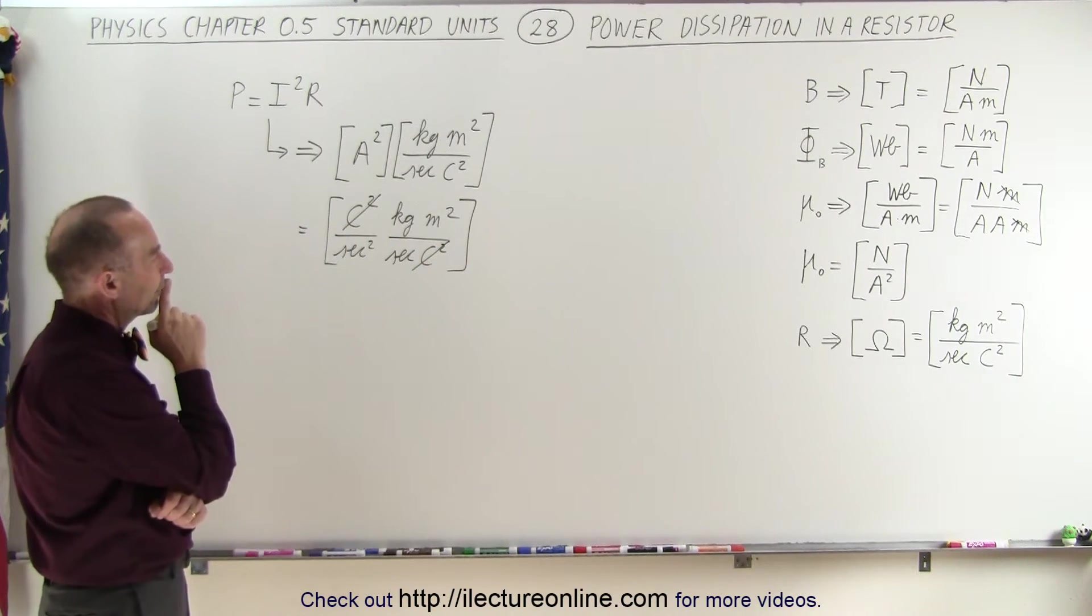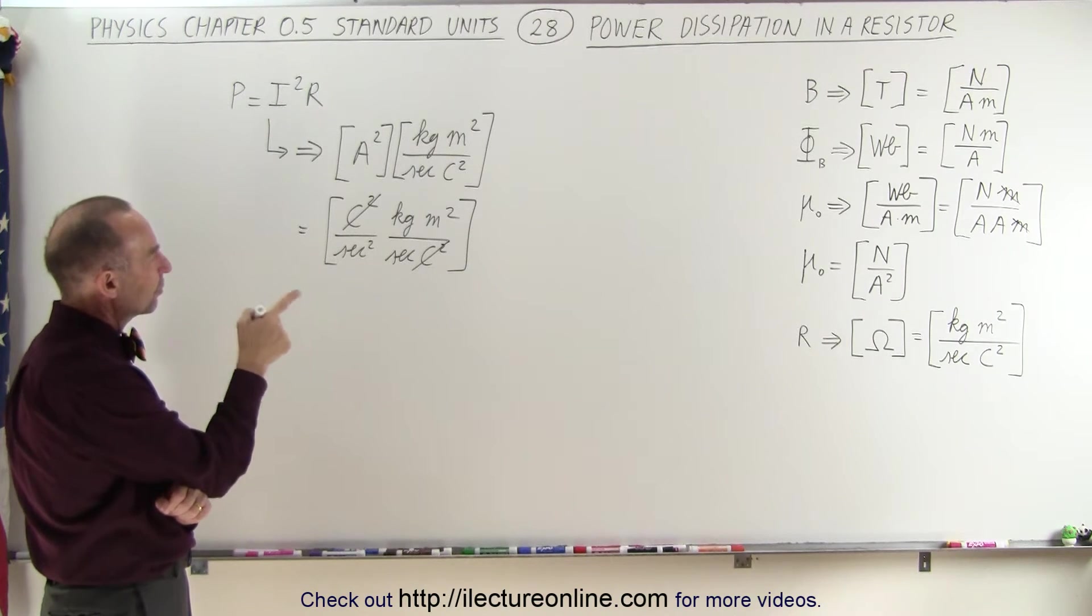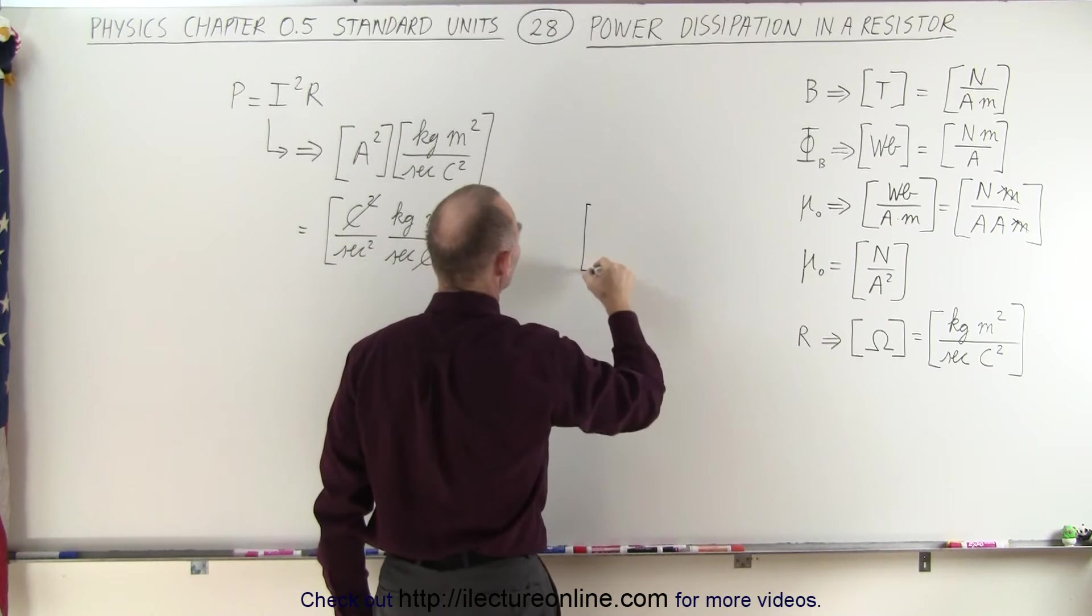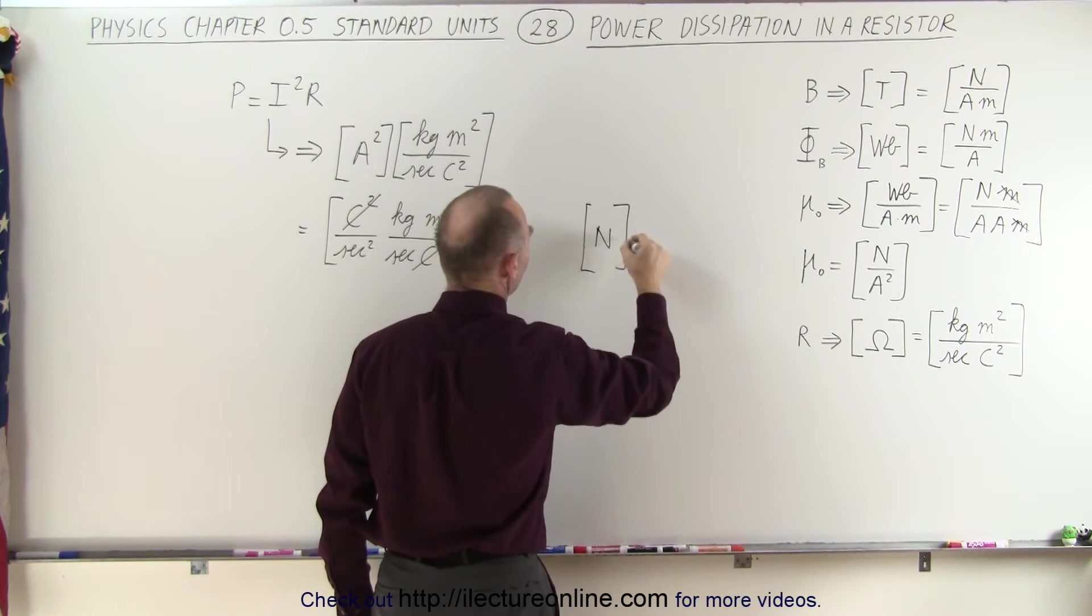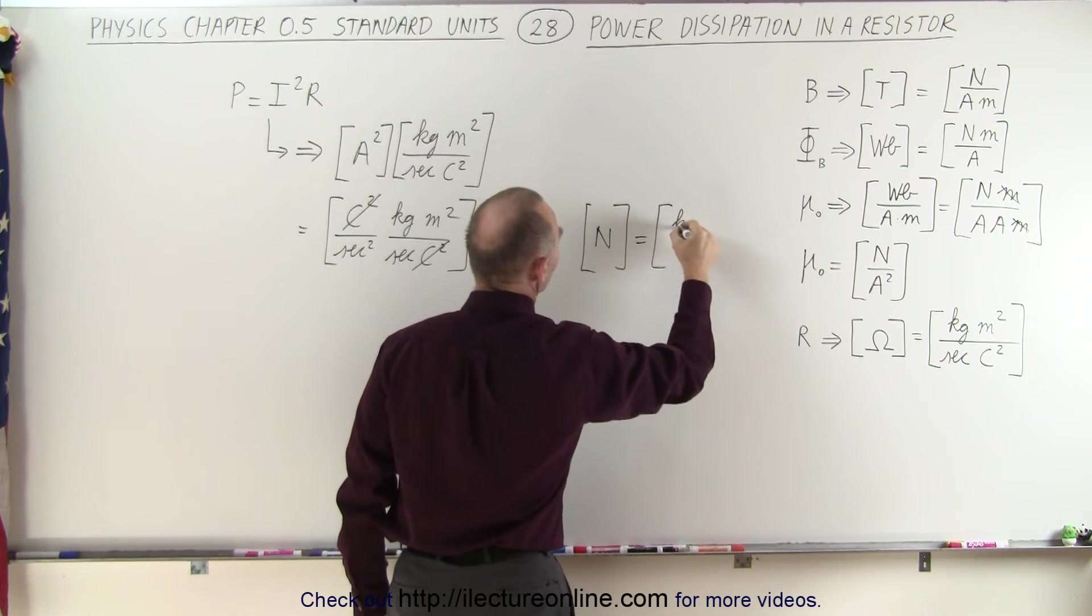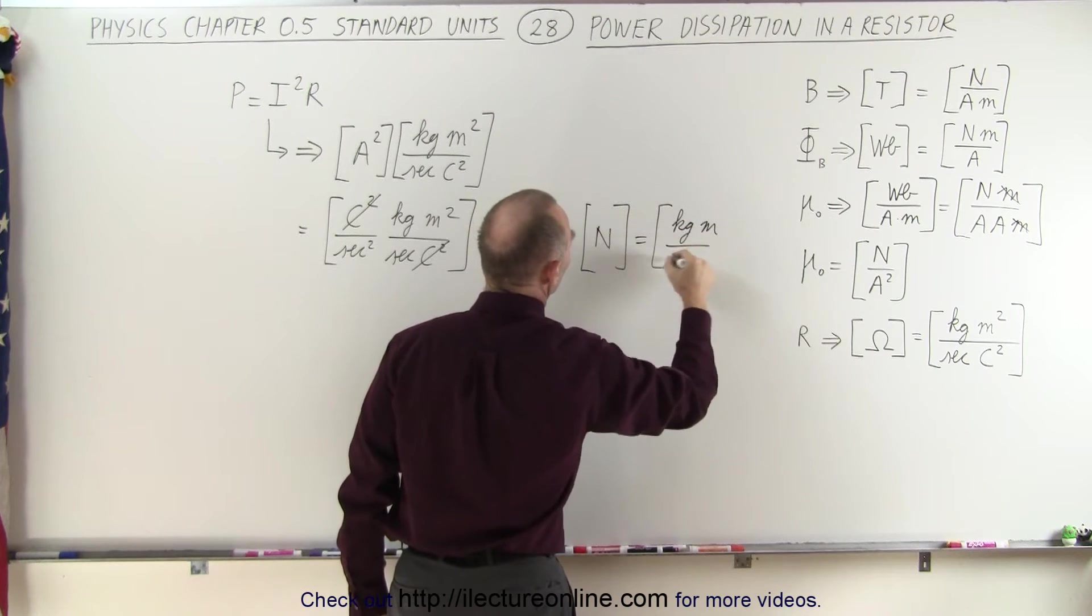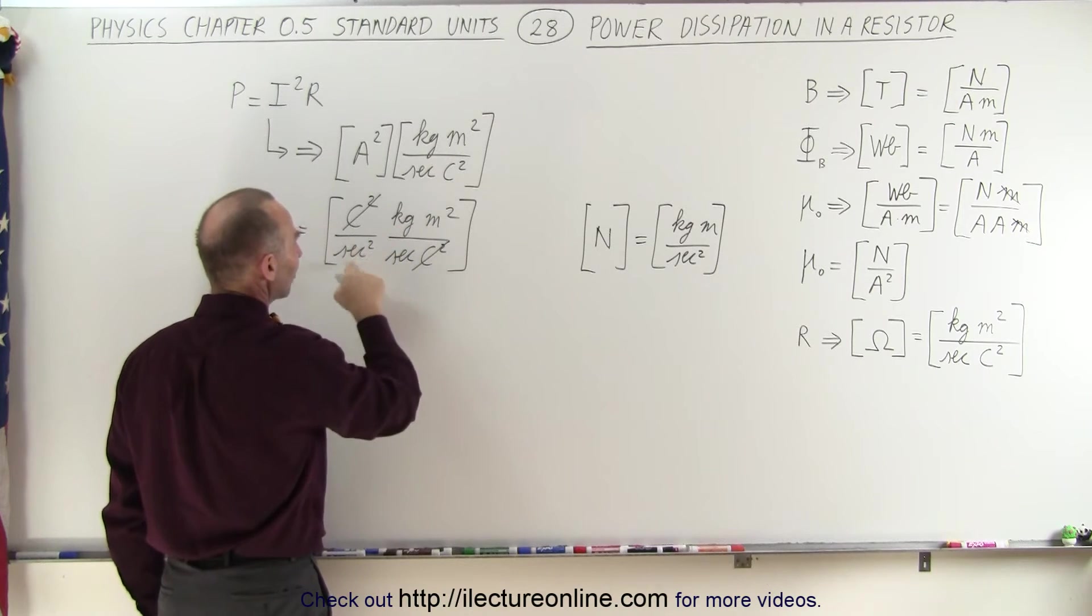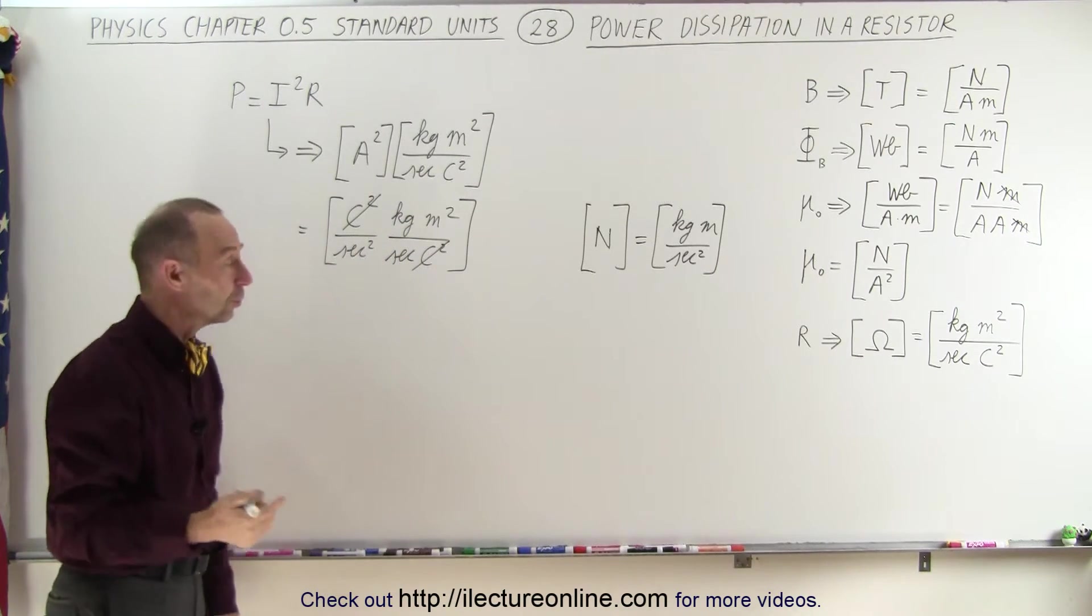Now we have kilograms meters per second squared, that's equal to a newton. And let's write that down here, so a newton is the same as a kilogram meter per second squared. So we're going to take the kilogram, one of the meters, and the second squared, and convert that to a newton.